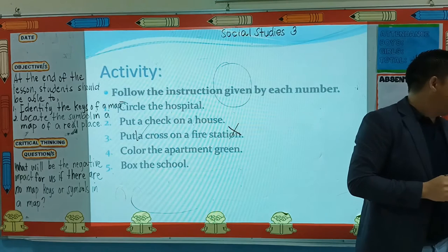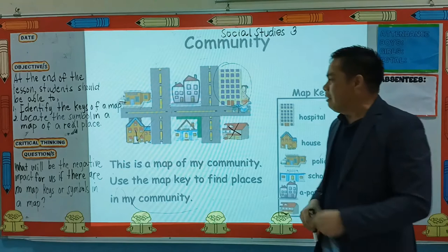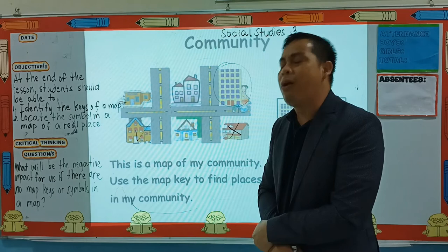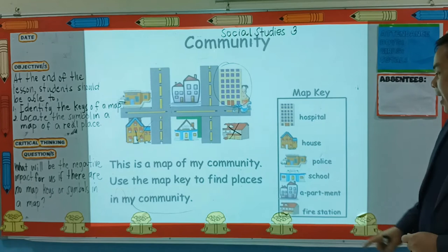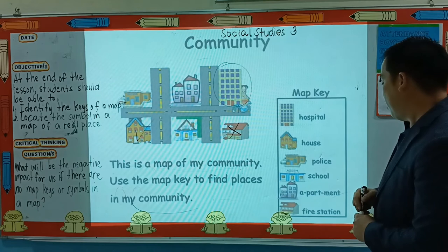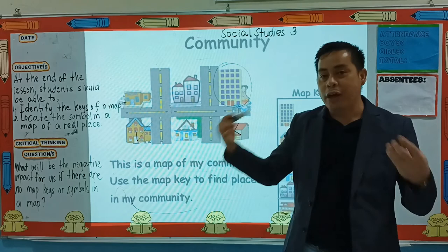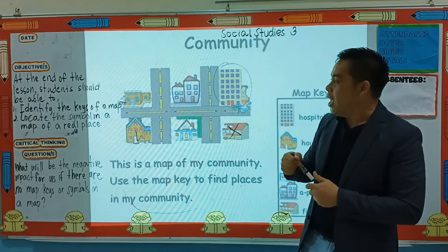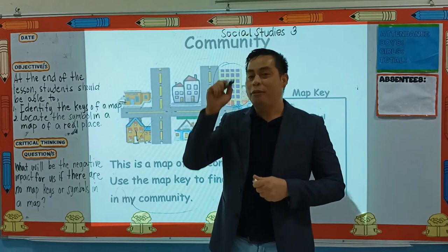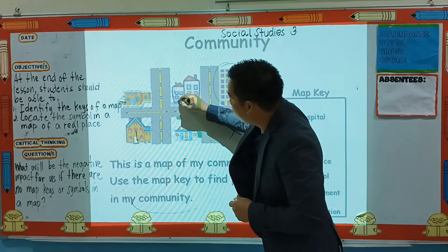Color the apartment green. So where is the apartment here? What will I do? I will look at the map key again. So where is the apartment here? This one is an apartment. So what will I do? I will color the apartment green. Since I don't have a green marker here, I will assume that this is colored green. So I will color the apartment green.